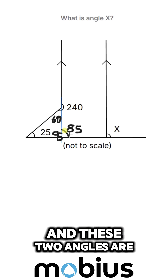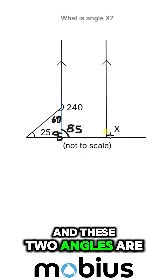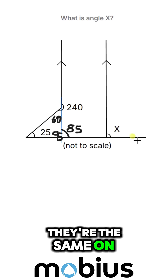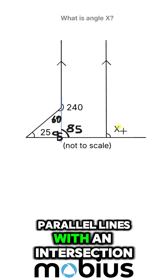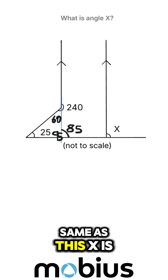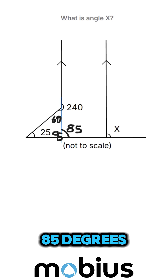This angle here and this angle here are corresponding angles — they're the same on parallel lines with an intersection. So x is the same as this angle: x is 85 degrees.